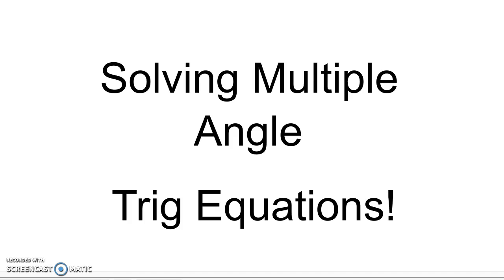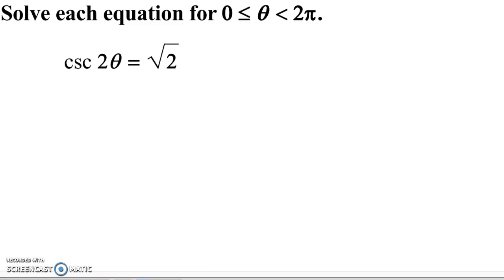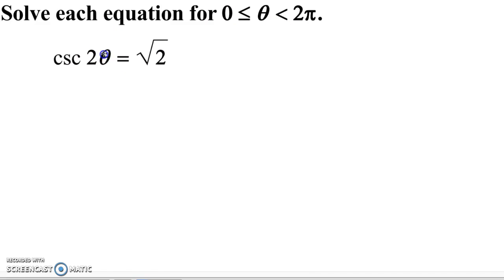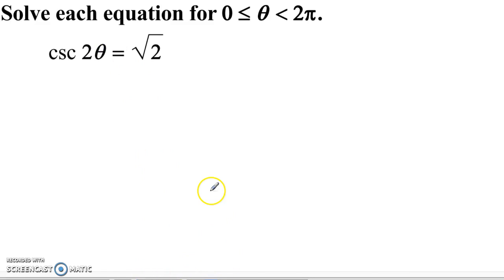These are like your regular trig equations, except that inside the argument — the sine, cosine, or tangent — you'll have a multiple of theta or x. Let's take a look at this first one: we've got cosecant of 2θ equals the square root of 2. We're solving for the domain theta between 0 and 2π, which is going to be particularly important where we've got a multiple of theta inside the argument.